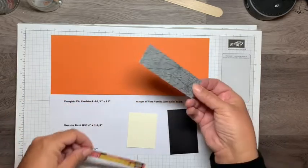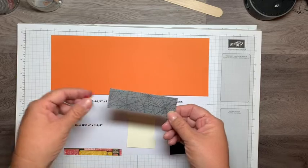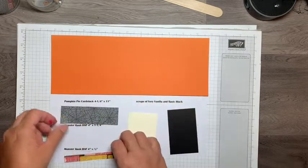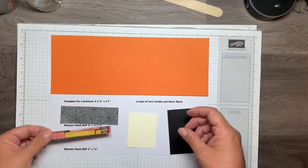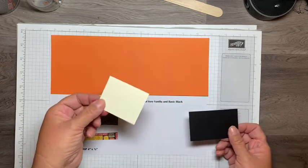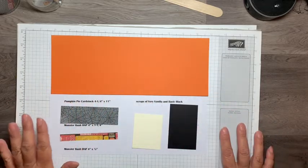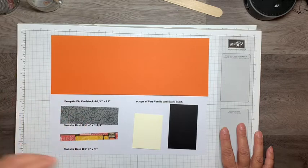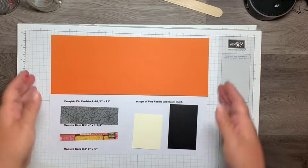These are double-sided, but I'm using the side with the spider webs. This one's cut at 4 inches by 1.25 inches, and this strip is 4 inches by 0.5 inches. I also have a couple scraps, one in Very Vanilla and one in Basic Black. Remember, all the dimensions will be on my blog, so if you don't get them now, don't worry—you can go straight to my blog.